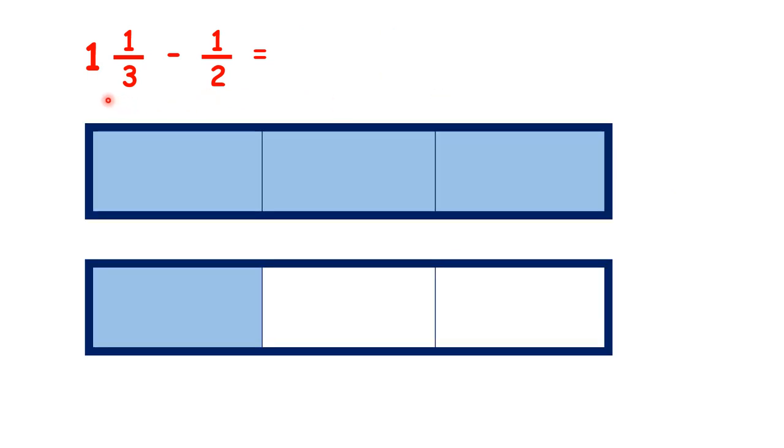So let's look at what we did. We started with 1 and 1 third. We took away half, and that left us with 5 sixths. Or to be more precise, what we really did was change 1 and 1 third into 8 sixths. Then we worked out that 3 sixths is the same as a half, so we took away 3 sixths to give us our answer.